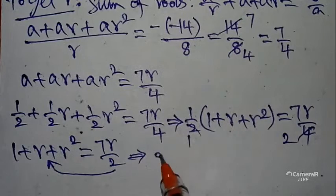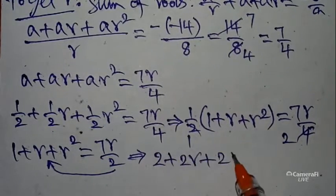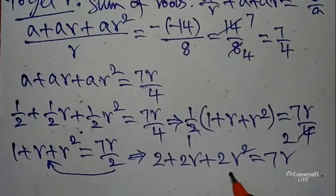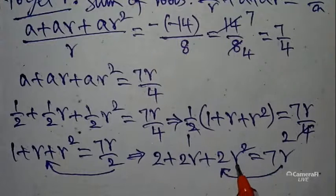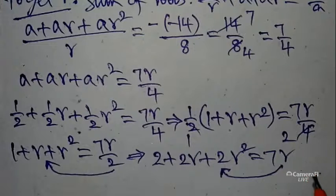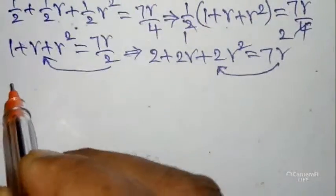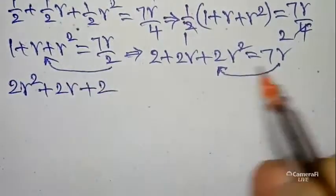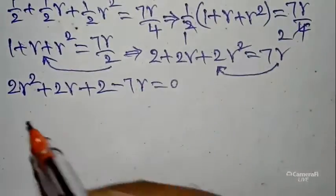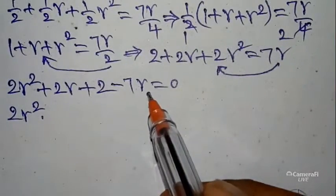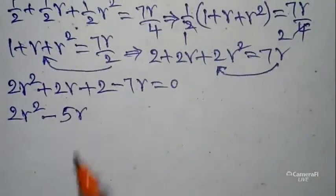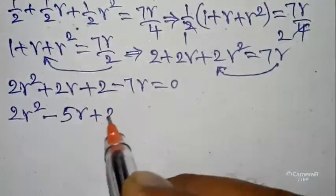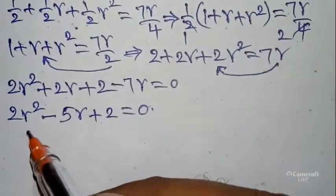After cross multiplication: 2 + 2r + 2r² = 7r. Since the r² coefficient is positive, bring 7r to the left side: 2r² + 2r + 2 − 7r = 0, which simplifies to 2r² − 5r + 2 = 0.